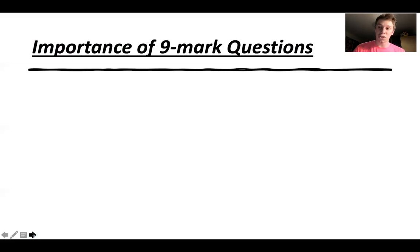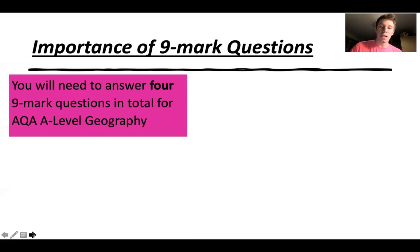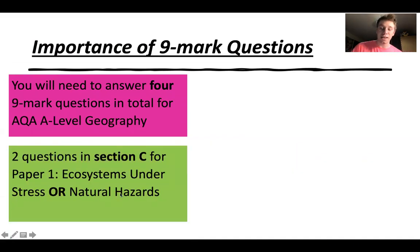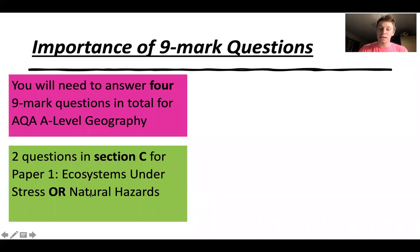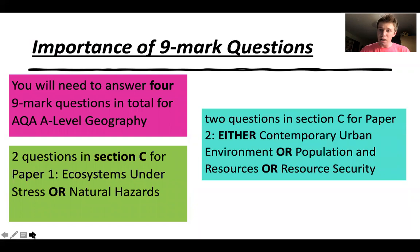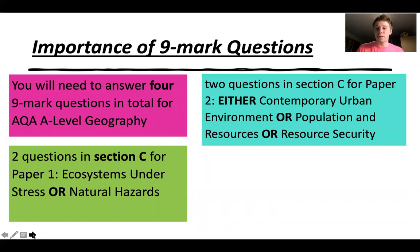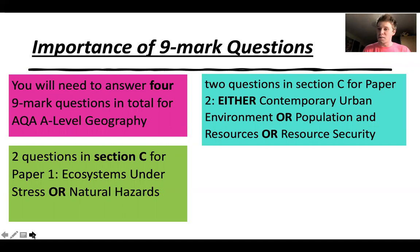It's important to know how to do these nine mark questions because in your A-level you will need to answer four nine mark questions in total — two in paper one and two in paper two. In paper one under section C you'll have two nine mark questions in either natural hazards or ecosystems under stress, and in the human paper under section C it will be either contemporary urban environments, population and resources, or resource security. You must only answer the topic you have been taught.